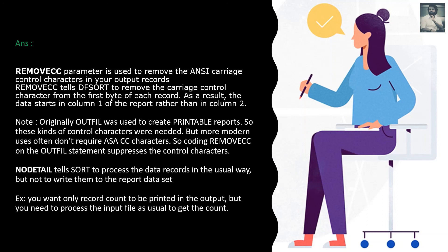NO DETAIL tells DFSORT to process the data records in the usual way but not to write them to the output dataset. For example, if you only want the record count printed in the output file but still need to process the entire input file to get that count, you code NO DETAIL. Processing happens as normal, but only what is explicitly needed — like the count — is written to the output file.